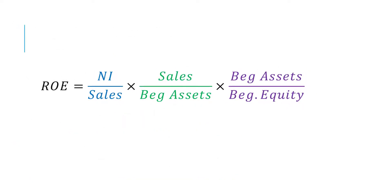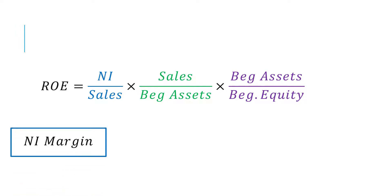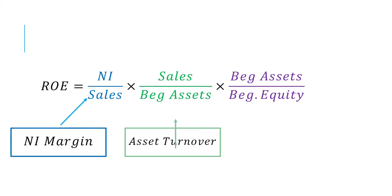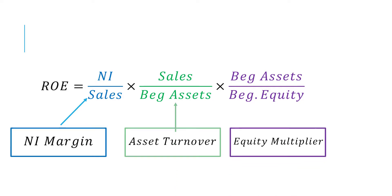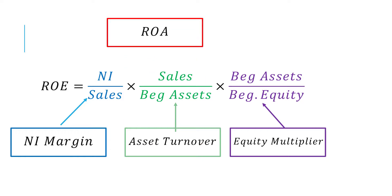Return on equity really has three parts to it. First, you have the net income margin. Second, you have asset turnover. And third, you have the equity multiplier. We've talked about profit margin — how much profit do you make for a given dollar level of sales? Asset turnover is a little bit different; that's more like volume. For a given level of assets, how much sales can you generate? If we combine those two measures, we get return on assets, because the sales cancel out.